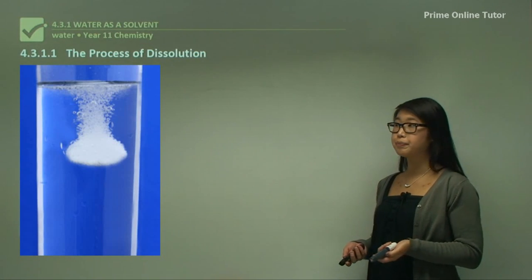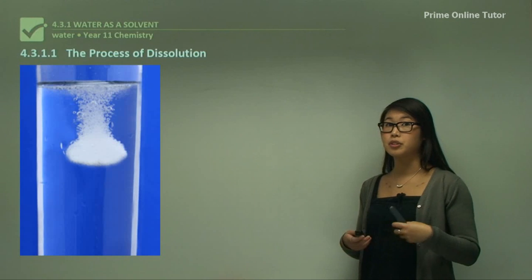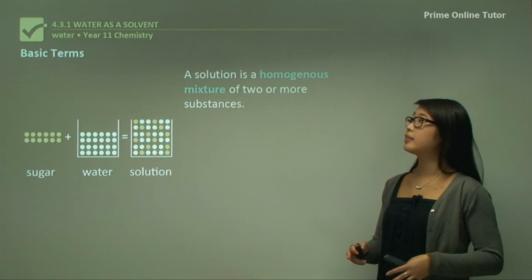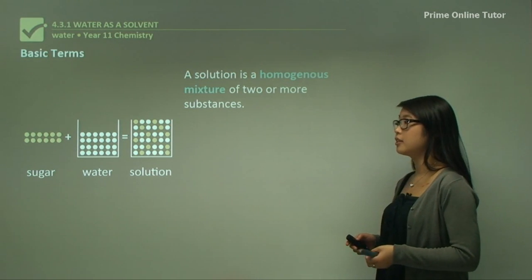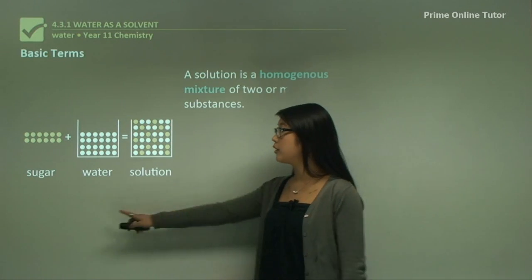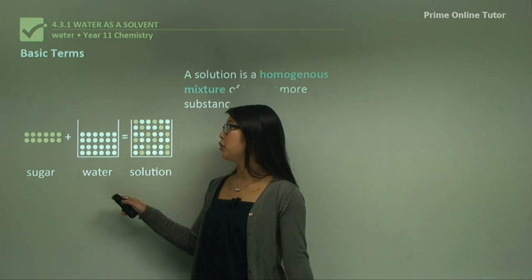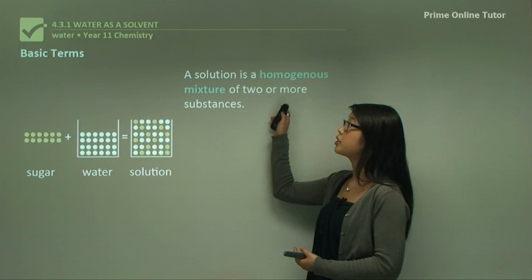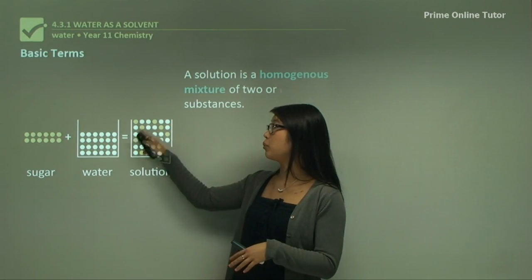In this section we'll be looking at the process of dissolution. Dissolution is the ability for one substance to be dissolved in another. A solution is a homogeneous mixture of two or more substances. Here sugar is represented by the yellow dots and water by the white dots, and when we add them together we form a uniform mixture all the way through.